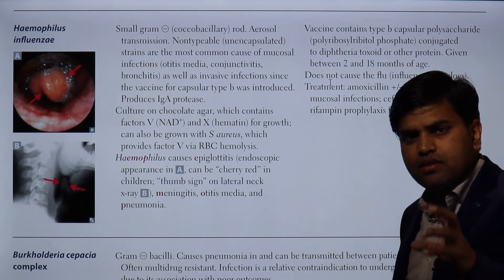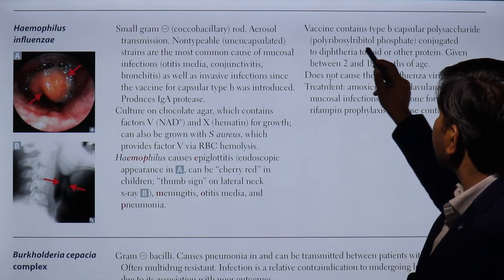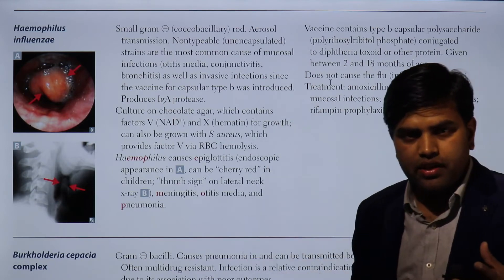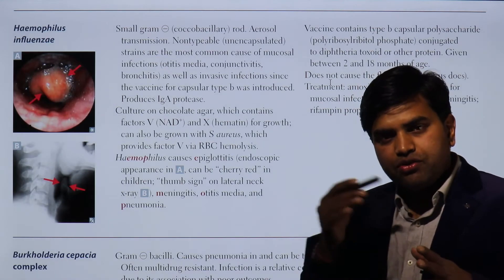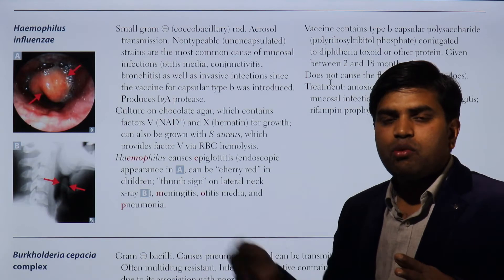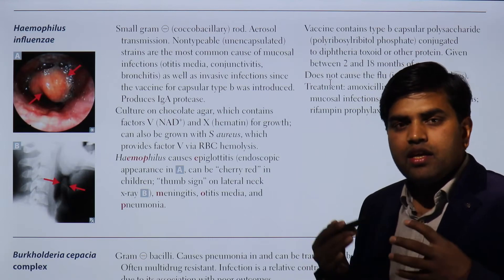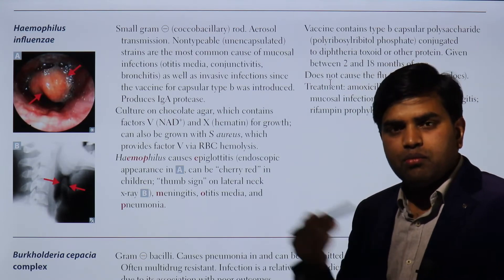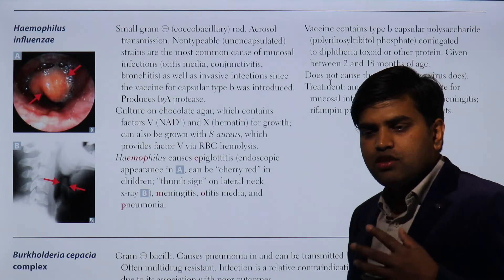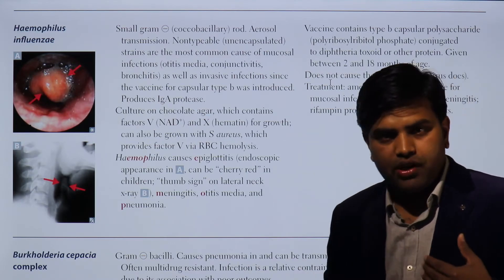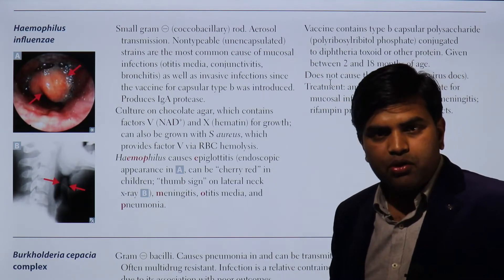The vaccine uses the capsule, but since its nature is polyribitol phosphate (a carbohydrate), it must be conjugated to a protein. Any material that triggers our immune cells — if it is a protein — will trigger T cells, forming memory cells. Carbohydrates and lipids do not form memory cells. Without memory cells, the vaccine would not provide long-term protection.